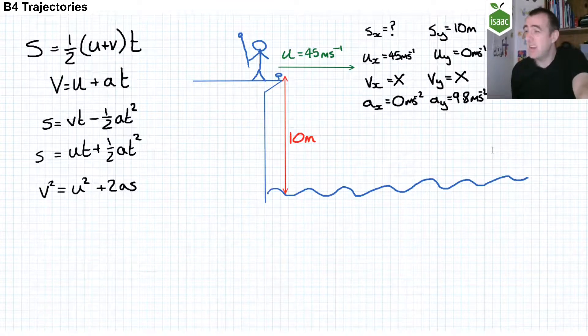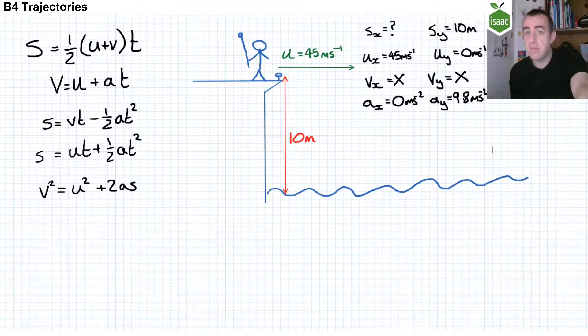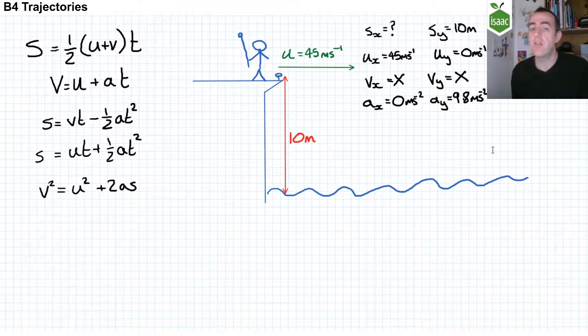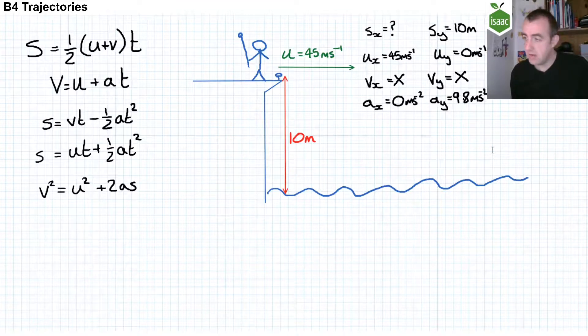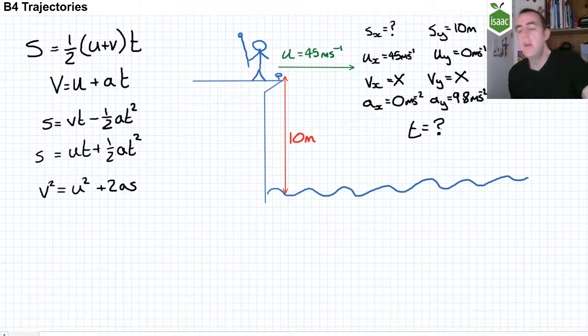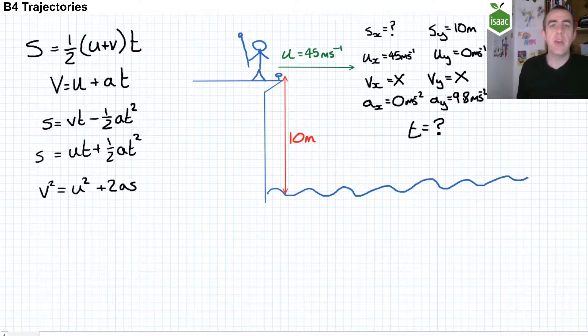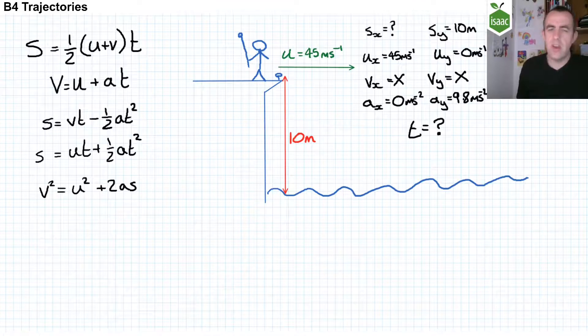Really, it doesn't matter. And I could have defined upwards as positive, in which case my displacement would have been negative 10 meters. And my acceleration would have been negative 9.8 meters per second squared. And time, which is the conduit between the two, is the thing that I also don't know. So I have two unknowns.